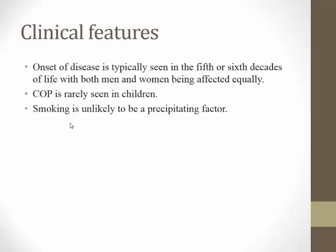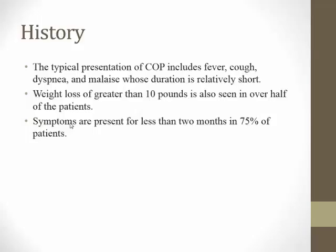Cryptogenic organizing pneumonia typically starts in the fifth and sixth decade and is equal in both genders. It is rarely seen in children. Smoking is unlikely to be a precipitating factor — only 25% of COP patients are smokers, suggesting smoking does not precipitate COP. Clinically, patients present as if they have pneumonia, with shortness of breath, fever, and cough.